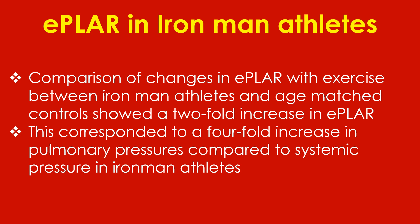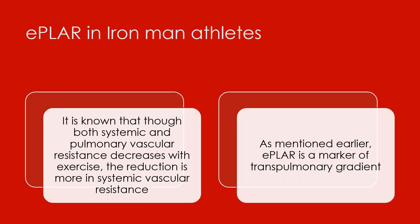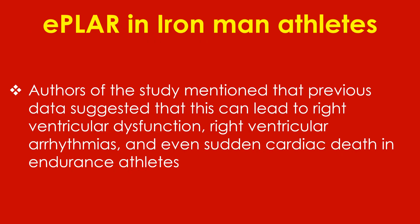Comparison of changes in E-PLAR with exercise between Ironman athletes and age-matched controls showed a two-fold increase in E-PLAR, corresponding to a four-fold increase in pulmonary pressures compared to systemic pressure in Ironman athletes. It is known that though both systemic and pulmonary vascular resistance decrease with exercise, the reduction is more in systemic vascular resistance. As E-PLAR is a marker of transpulmonary gradients, authors noted that previous data suggested this can lead to right ventricular dysfunction, right ventricular arrhythmias, and even sudden cardiac death in endurance athletes.